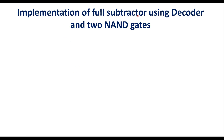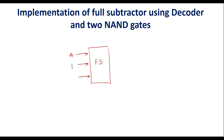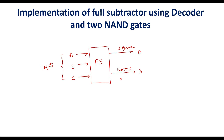In this video, I will implement a full subtractor using a decoder and two NAND gates. We know that in a full subtractor, there are three inputs and two outputs. Let me draw the block diagram. This is the full subtractor with A, B, C as inputs. These are the outputs: the difference output, which I will represent as D, and the borrow, which I will represent as B. So it has three inputs and two outputs. To implement this, we need a 3-to-8 decoder since it has three inputs.